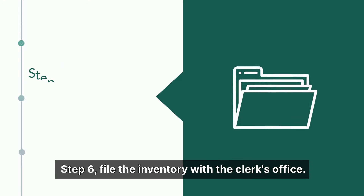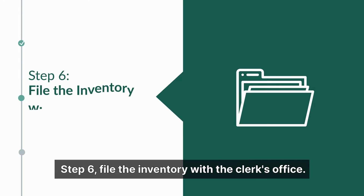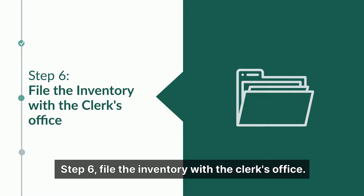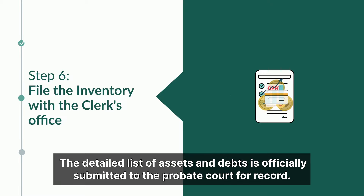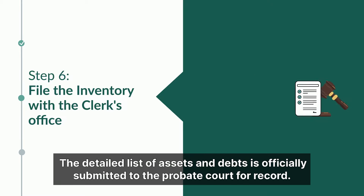Step 6: File the inventory with the clerk's office. The detailed list of assets and debts is officially submitted to the probate court for record.